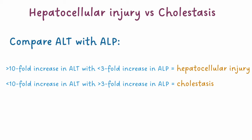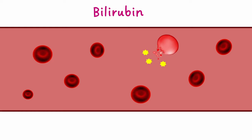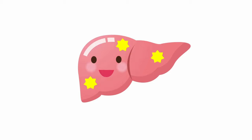Now we're going to look at the markers of synthetic function. Bilirubin is a breakdown product of haemoglobin, so it's released into the blood when red blood cells haemolyse. This is usually a natural part of the red blood cell cycle, where bilirubin will travel to the liver. A healthy liver will conjugate bilirubin, which means a molecule is added to it. Conjugated bilirubin is water-soluble, so it can be excreted via the kidneys into the urine. Some bilirubin is also excreted via the bile duct into the faeces.